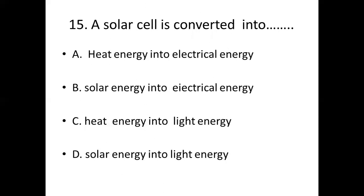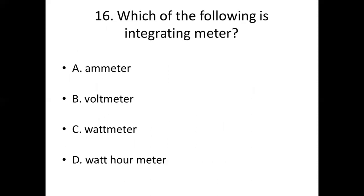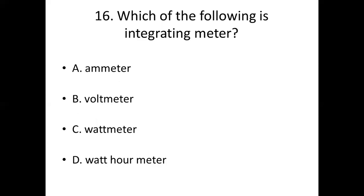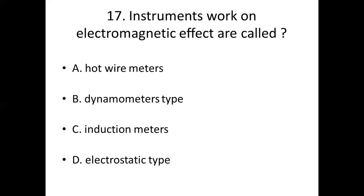Sixteenth bit. Which of the following is an integrating meter? Option A: Ammeter. Option B: Voltmeter. Option C: Wattmeter. Option D: Watt hour meter. Answer: Option B, Voltmeter.